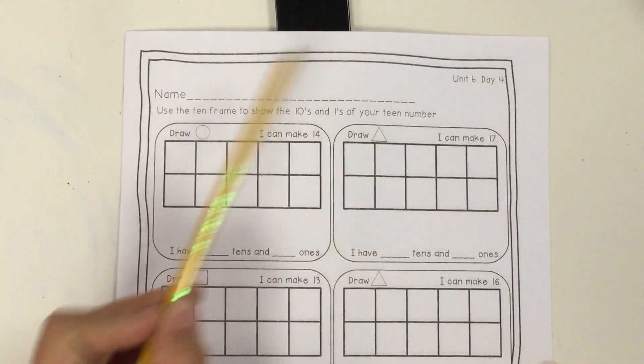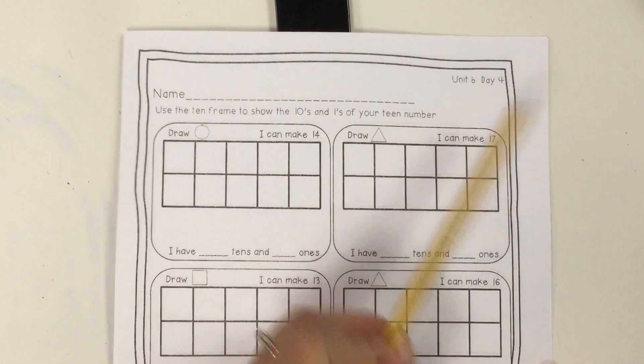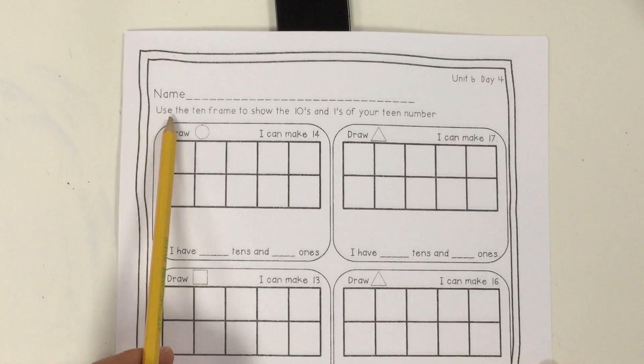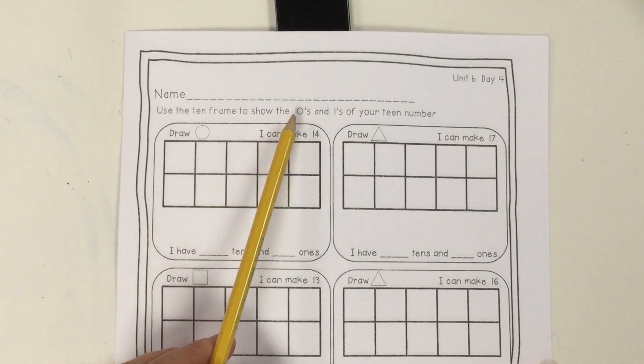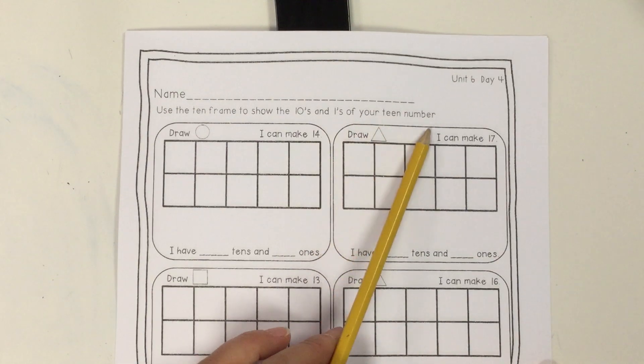Here are the directions for the worksheet, Unit 6, Day 4. It says, use the 10 frame to show the 10s and 1s of your teen number.